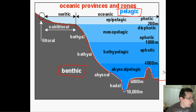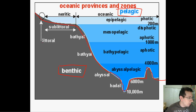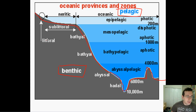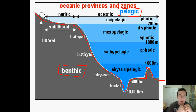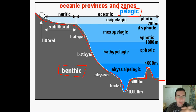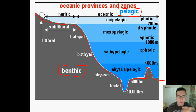Let's start with the different benthic zones. The first is the littoral or intertidal zone — the zone that is sometimes above water and sometimes below water. That's where you find things like sand dollars, crabs, moss, algae, and simple sea plants living in areas that are sometimes covered with water and sometimes exposed.